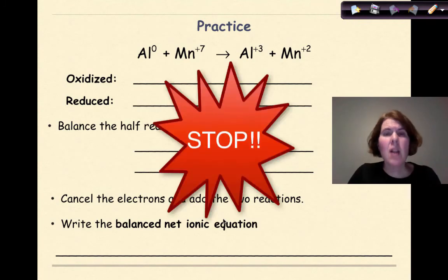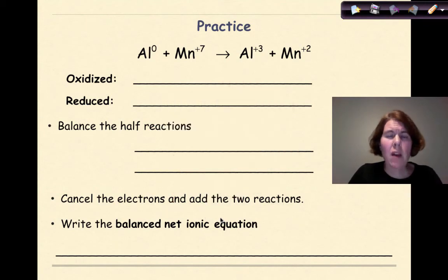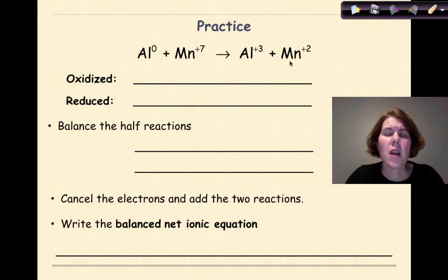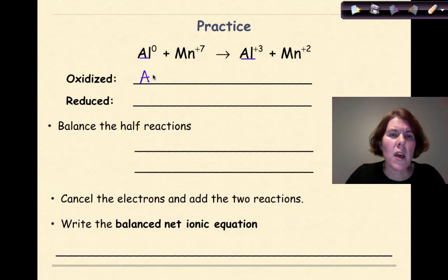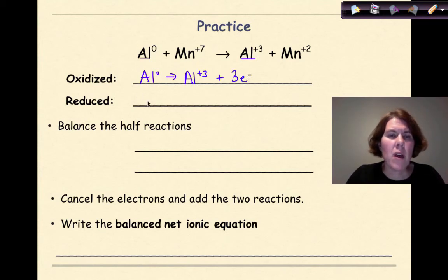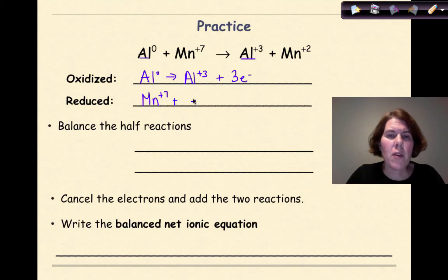Now I want you to stop and see if you can do this one, then come back and check your work. Welcome back, let's see how you did. We have Al zero plus Mn plus seven yields Al plus three plus Mn plus two. So Al is going from zero to plus three — I'm going to write Al zero yields Al plus three, and we know that's going to lose three electrons. Now Mn is going from plus seven to plus two, so it's definitely being reduced. If we look at a number line, the difference between plus seven and plus two is the gain of five electrons.